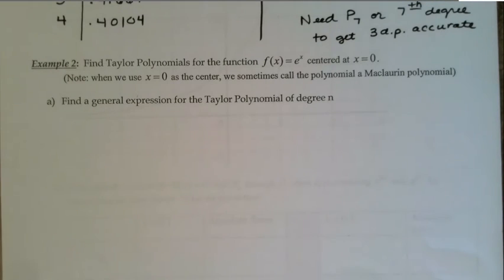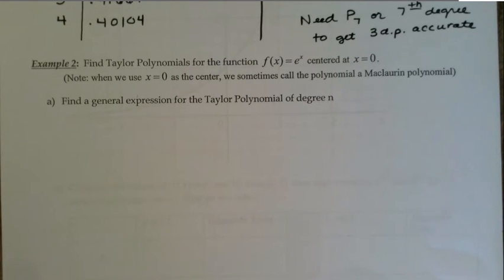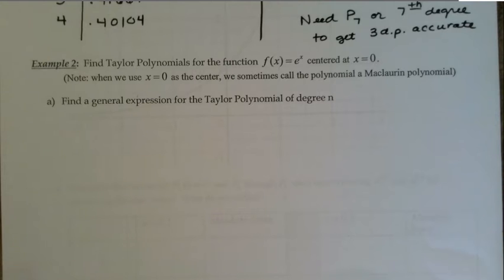We're continuing with section 9.1. Now that we've established what a Taylor polynomial is and how to calculate one, we're going to practice calculating a few more Taylor polynomials and then using them to make approximations for values of functions that are, by our new definition, hard to calculate.